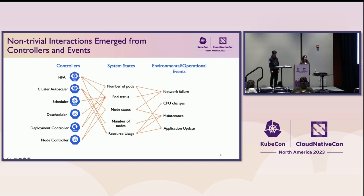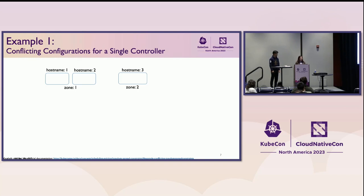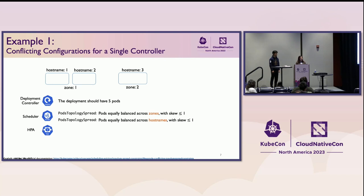I'm going to show three concrete examples of how failures can happen. The first is caused by a conflicting configuration for a single controller, modified from official Kubernetes documentation. In this example, there are three nodes. Each node includes two labels: the hostname and the zone — which may be your availability zone. There are three controllers. The deployment controller tries to deploy five pods, and the scheduler has two constraints using the topology spread plugin, which tries to evenly balance pods across different node groups.